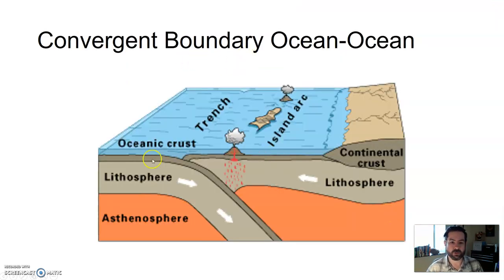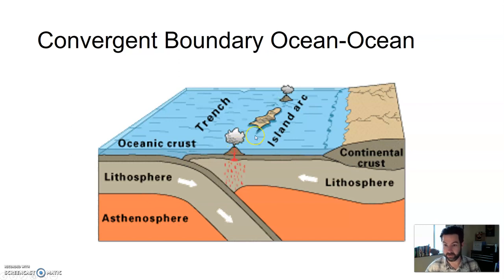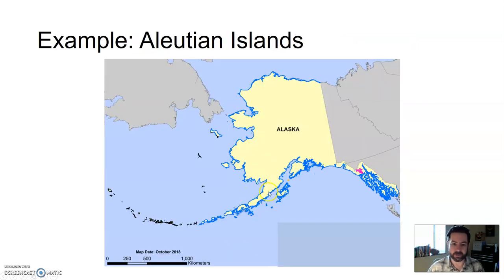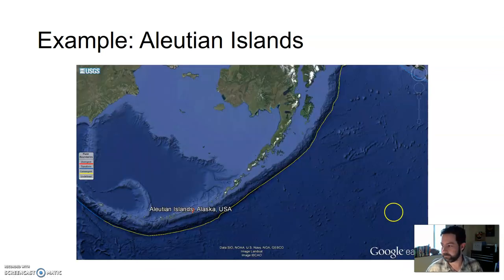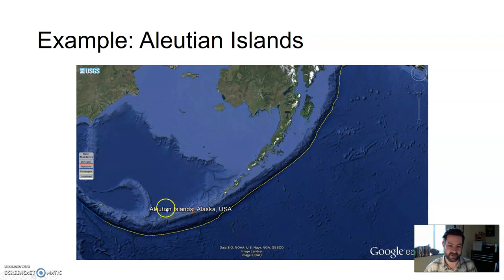What about ocean to ocean crust? When oceanic crust collides with oceanic crust, you again get volcanics and earthquakes, but you can also get island arcs — isolated volcanic islands. A great example are the Aleutian Islands off of Alaska, where oceanic crust converges with oceanic crust creating this island arc. These are all mostly volcanic islands. You can also see a deep trench where something is getting subducted.